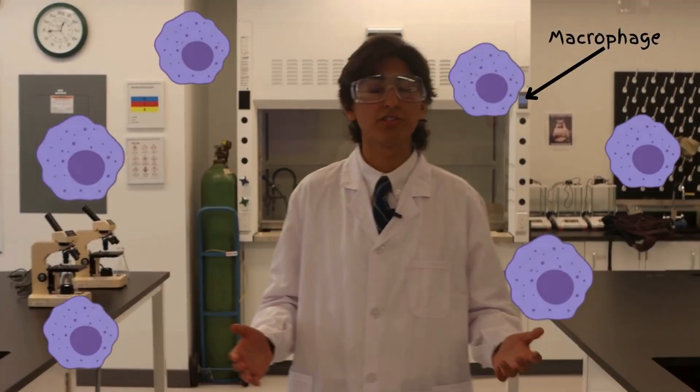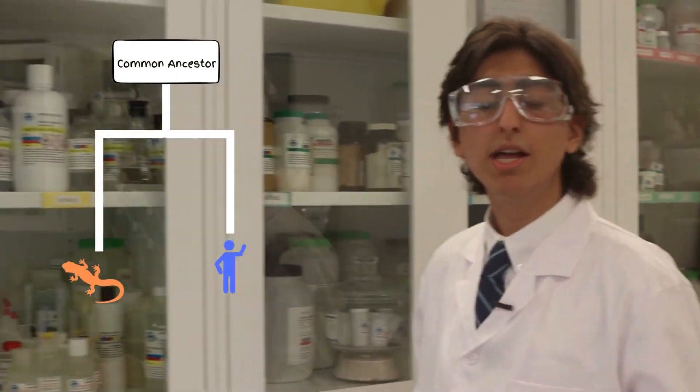Mammals don't naturally form a blastema, but since salamanders and humans shared a common ancestor, we might be able to restore genes lost to evolutionary time.